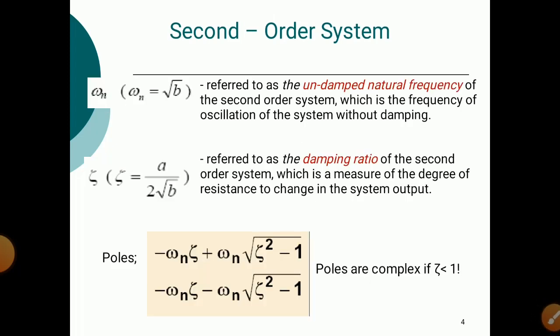If ωn = √b, it is referred to as the undamped natural frequency of the second order system — the frequency of oscillation of the system without damping. Also, ζ = a / (2√b), referred to as the damping ratio of the second order system, which is a measure of the degree of resistance to change in the system output. Damping provides degree of resistance to change in the system output.